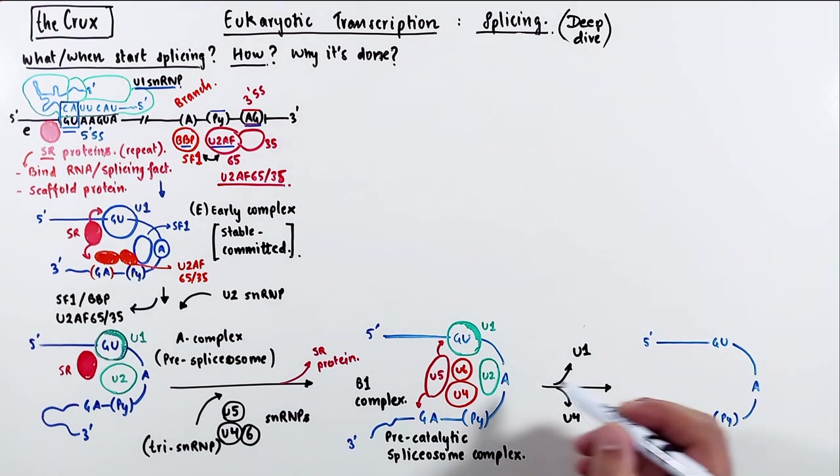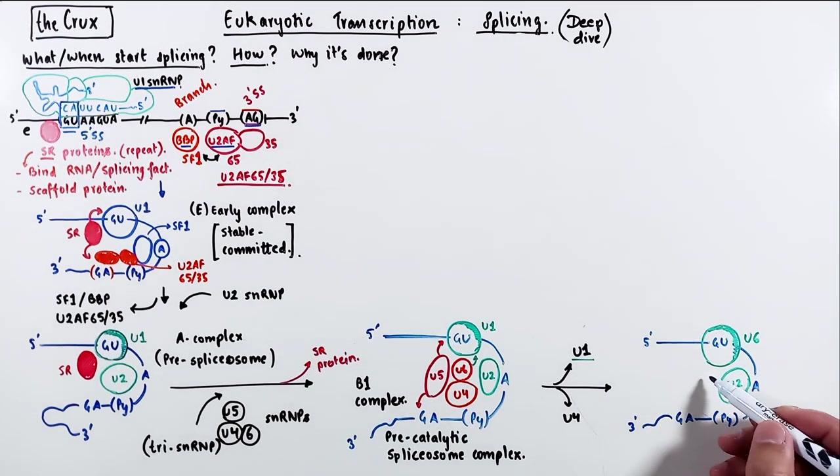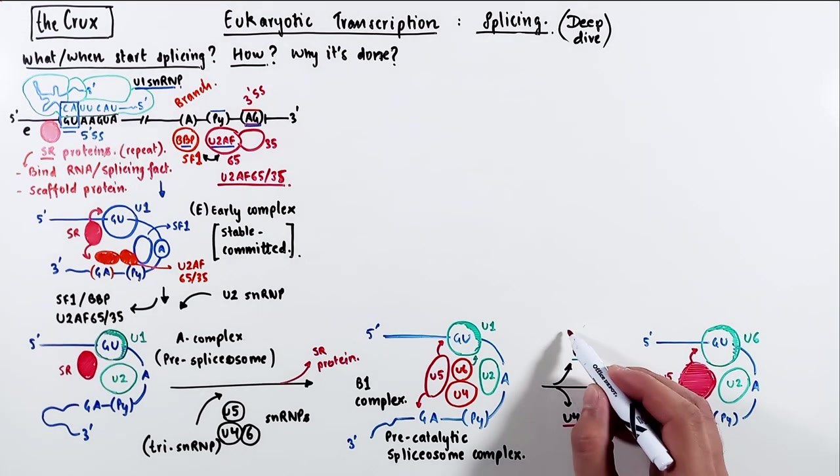So in our new conformation, the U6 replaces the U1 at the 5' splice site. The branch point and pyrimidin stretch are still paired with the U2, and the U5 is scaffolding the entire complex.